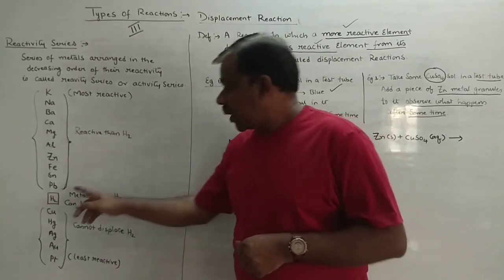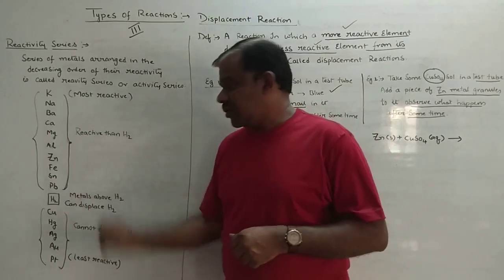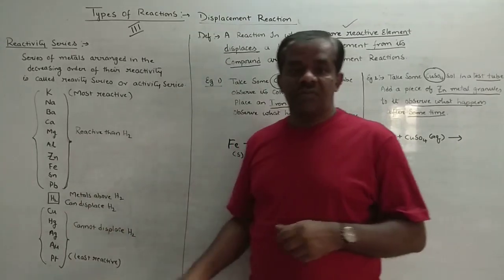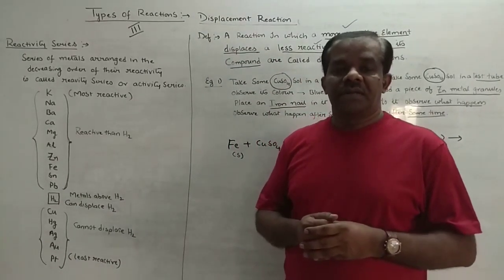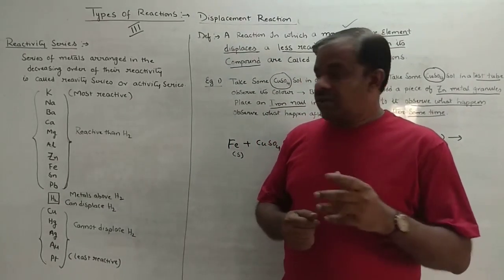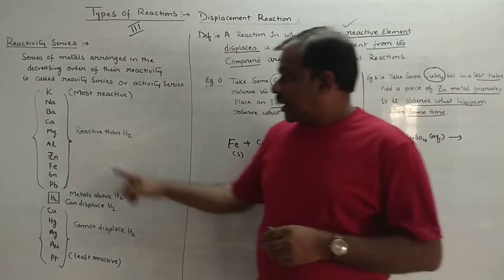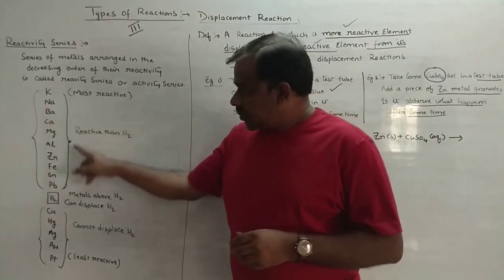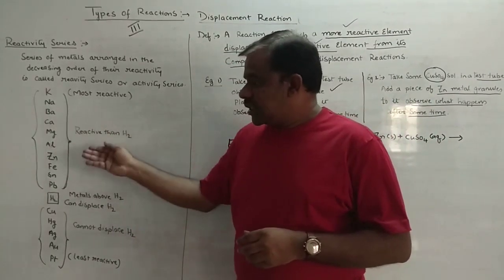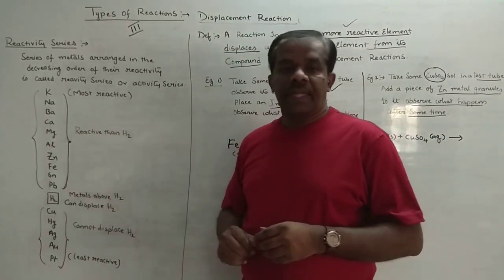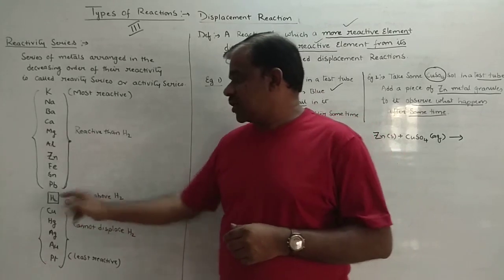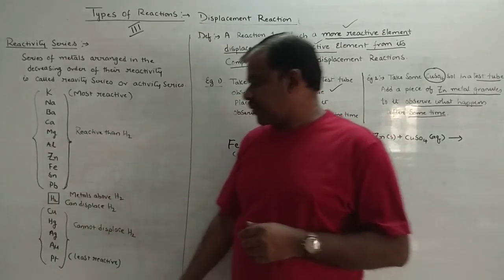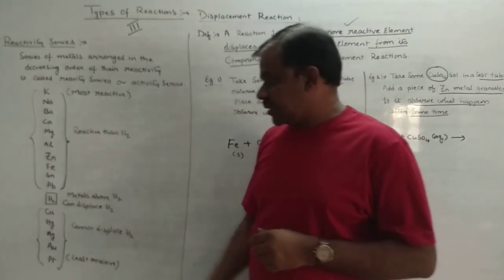In Part 2, we have hydrogen. Why is hydrogen placed in the reactivity series of metals? Hydrogen, like all these metals, can lose its electron. Because of this character, hydrogen is placed in the reactivity series of metals.